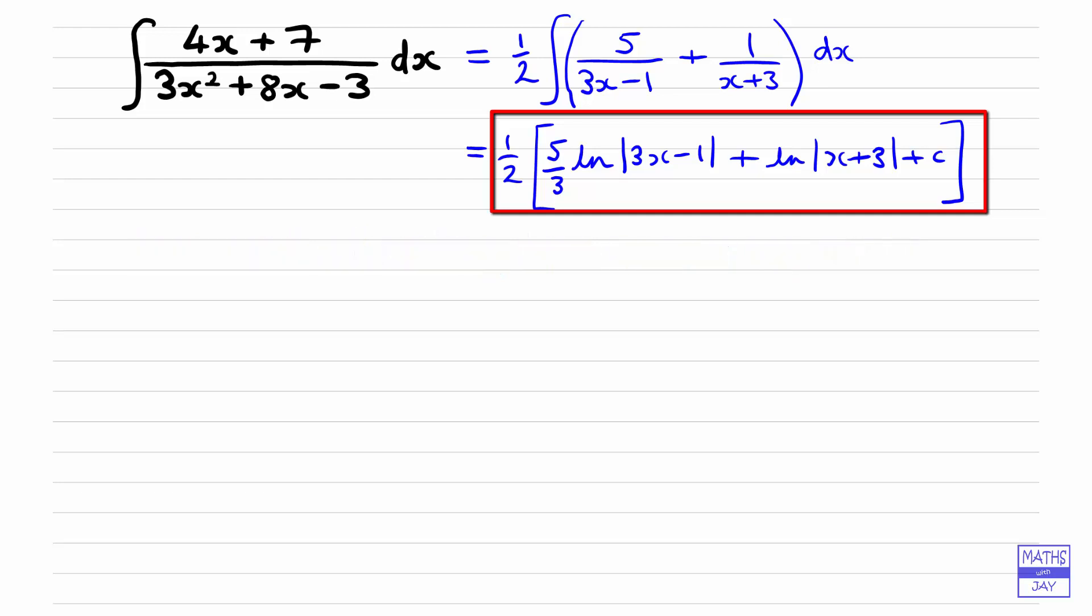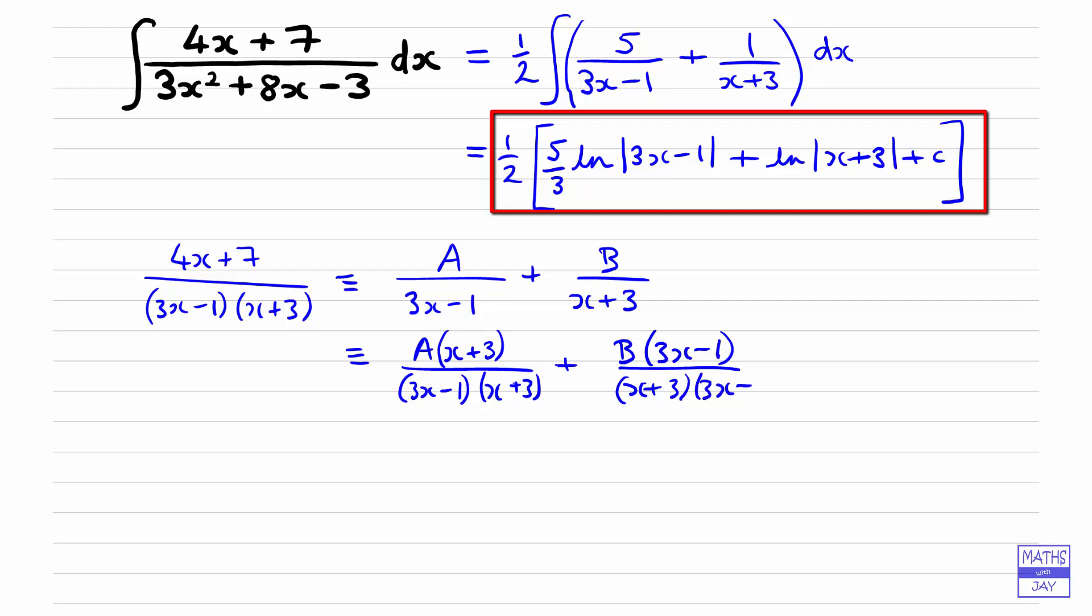So as before we start off with writing down 4x plus 7 over, and we factorise that, so that was 3x minus 1 times x plus 3. And then at the next stage we actually write in A to represent the first unknown number and B to represent the second one. And then we add together the fractions on the right hand side. So we're going to get, multiplying the first fraction numerator and denominator by x plus 3, we would get this, so we're multiplying top and bottom by x plus 3, and similarly the second fraction we multiply top and bottom by the 3x minus 1.